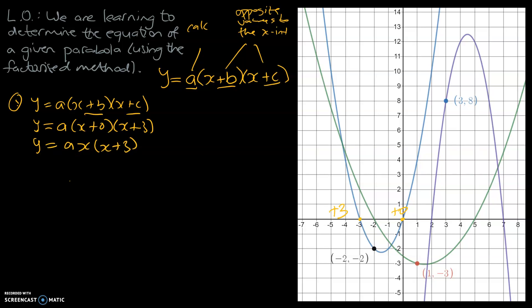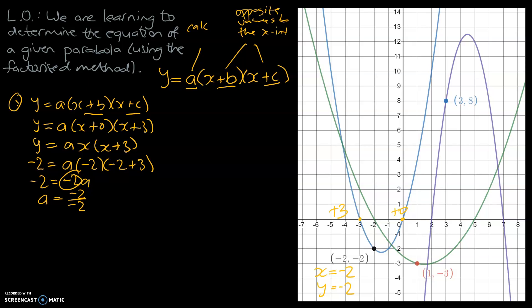Now I'm going to hunt for another point on our graph to give us more information. We've been told our graph is at the point negative 2, negative 2 — so x equals negative 2 and y equals negative 2. We put both values into our equation: negative 2 equals a times negative 2 times (negative 2 plus 3). Simplifying: negative 2 plus 3 is positive 1, leaving us with negative 2a. Then negative 2a divided by negative 2 gives a equals 1.